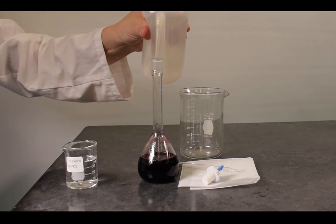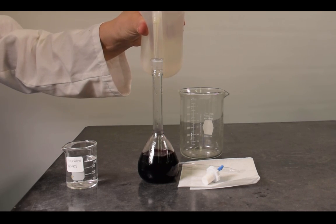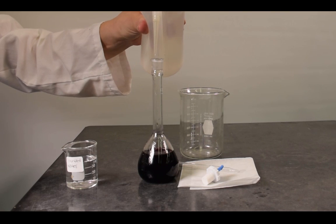Add more diluent until you are near the calibration mark. This can be done by squeezing the wash bottle directly into the flask or by pouring the diluent in using a funnel and funnel support.